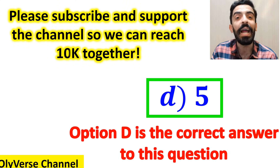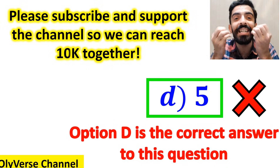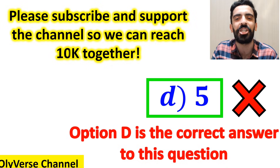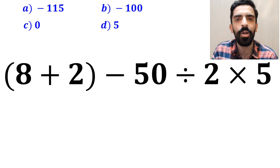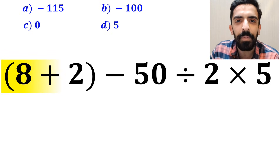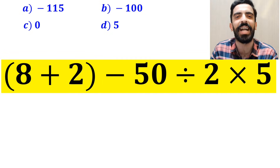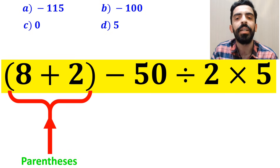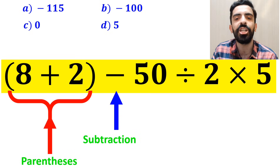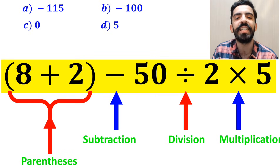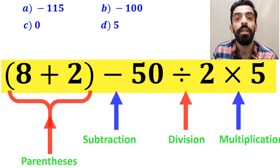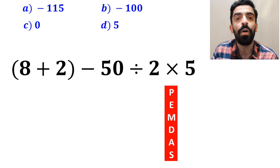But I have to say, we're tricked and it's not the correct answer to this question. Alright, now let me walk you through how to solve this expression correctly. As you can see on the screen, in this expression, first we have parentheses, then a subtraction sign, followed by a division, and finally a multiplication. To solve this question, we need to follow the PEMDAS rule step-by-step.